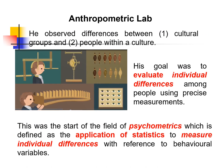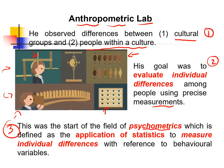Now, another key finding that started the field of human genetics is Galton's obsession with counting and quantifying things — the anthropometric lab. He was obsessed with seeing differences between humans, trying to look for differences between cultural groups and between people within a culture. He started measuring skull size and curvature, hair color, eye color, and reaction time. His goal was to evaluate differences between humans using precise measurement, and this started the field of psychometrics, defined as the application of statistics to measure individual differences with reference to behavioral variables.